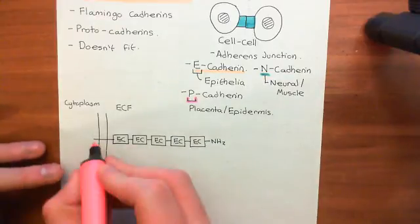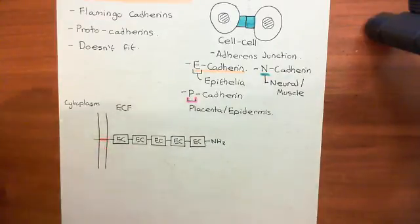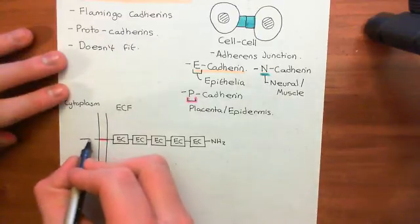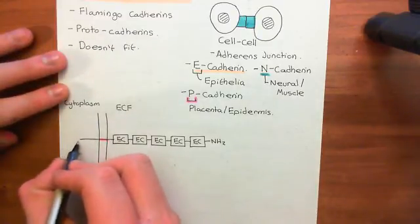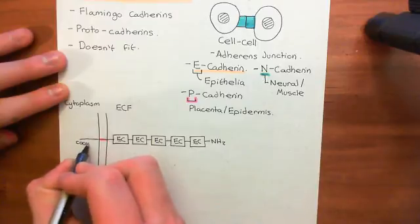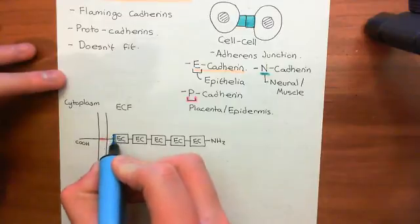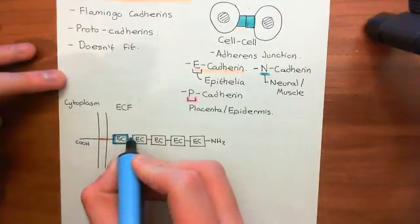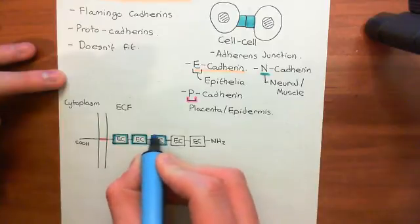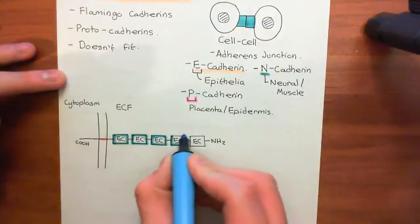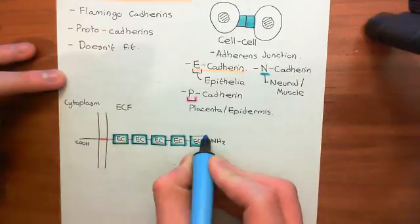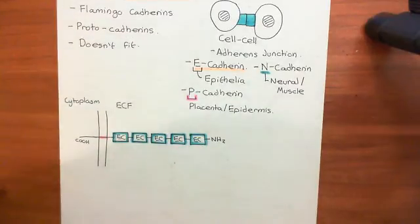After the five extracellular catherin domains, you have a single membrane-spanning alpha helix, and then a short cytoplasmic tail with the carboxylic acid terminus intracellularly. So let's colour those extracellular catherin domains in blue — five extracellular catherin domains in total. That's the structure of all of these classical catherines.